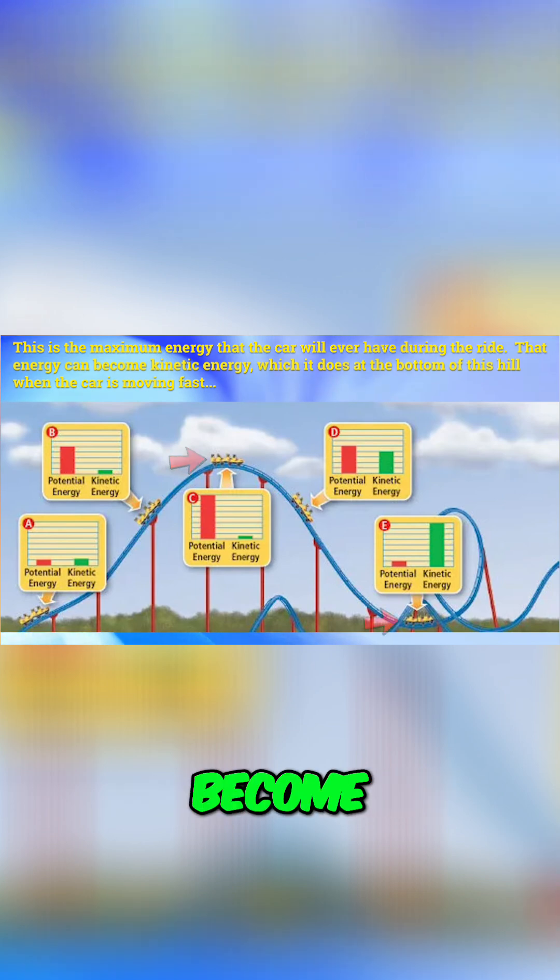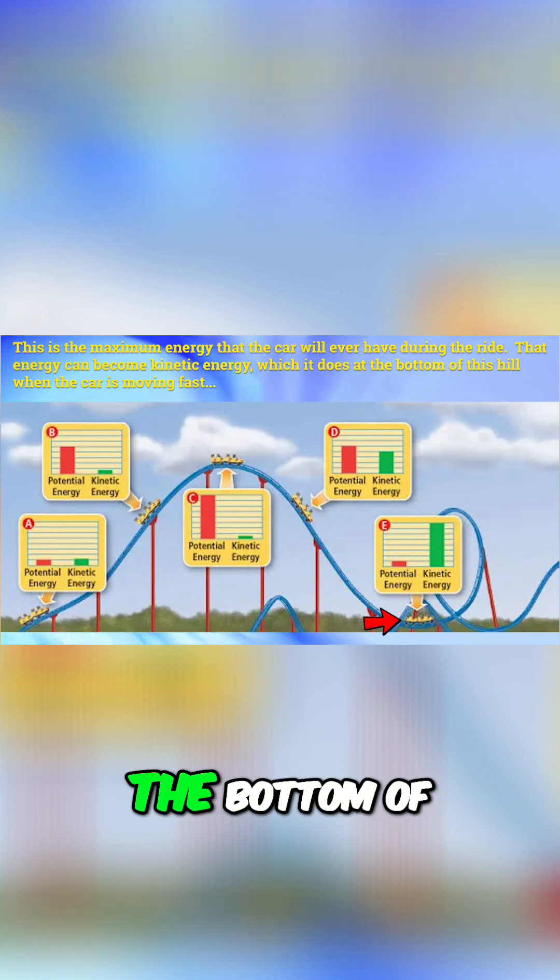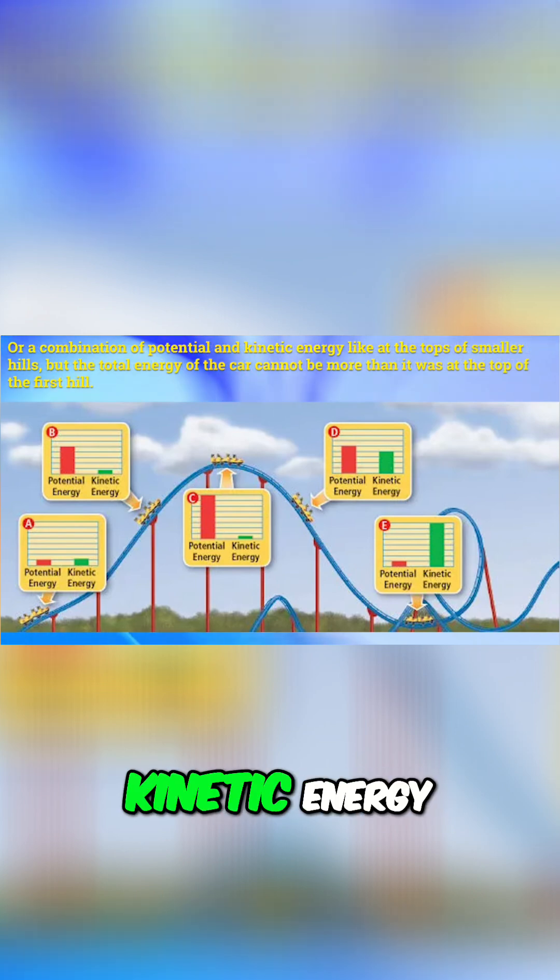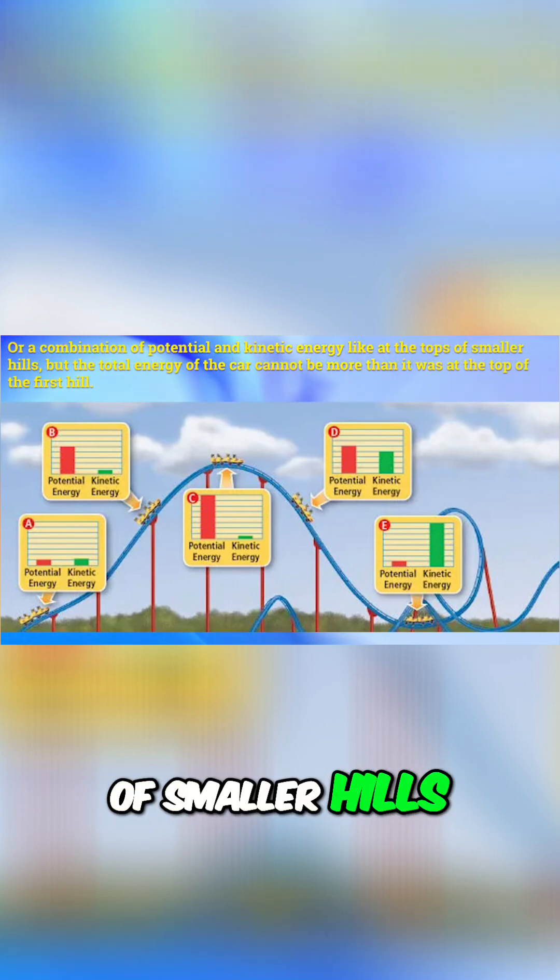That energy can become kinetic energy, which it does at the bottom of this hill when the car is moving fast, or a combination of potential and kinetic energy like at the tops of smaller hills.